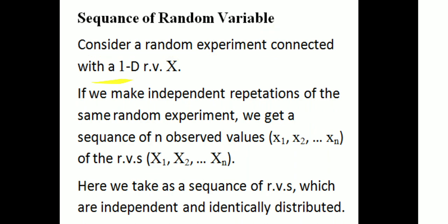Consider a random experiment connected with a one-dimensional random variable X. If we make independent repetitions of the same random experiment, we get a sequence of n observed values x1, x2, ..., xn of the random variables X1, X2, ..., Xn.